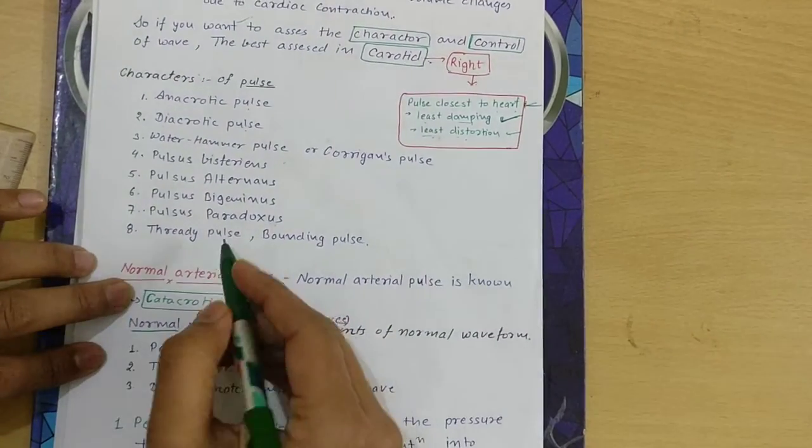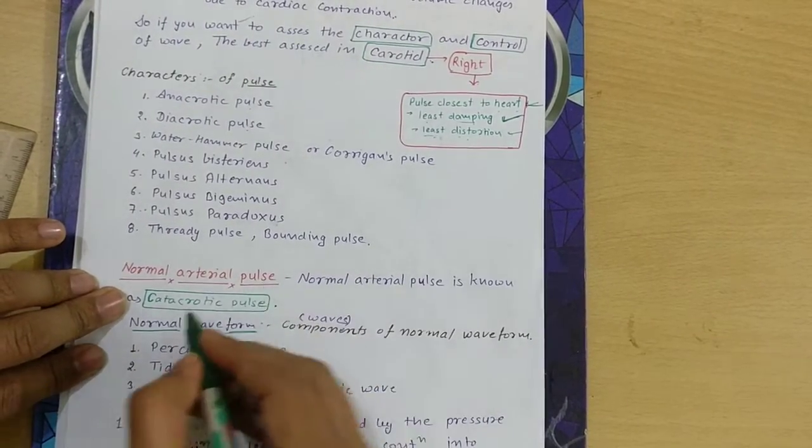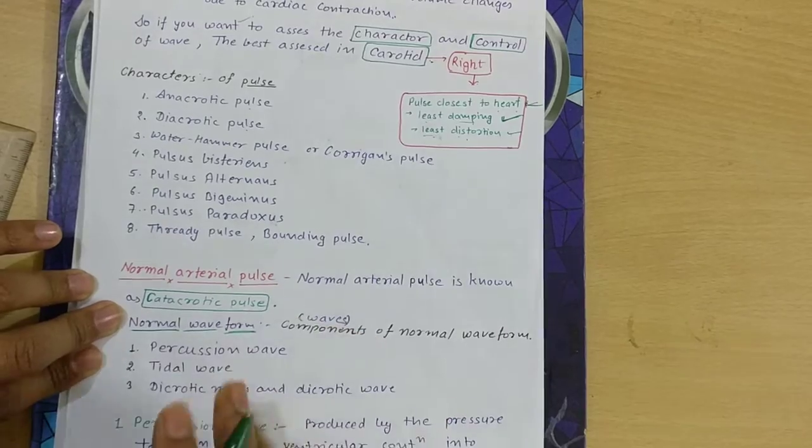We will discuss all these pulses one by one later. First we are talking about the normal arterial pulse, which is also known as catacrotic pulse. This is important.